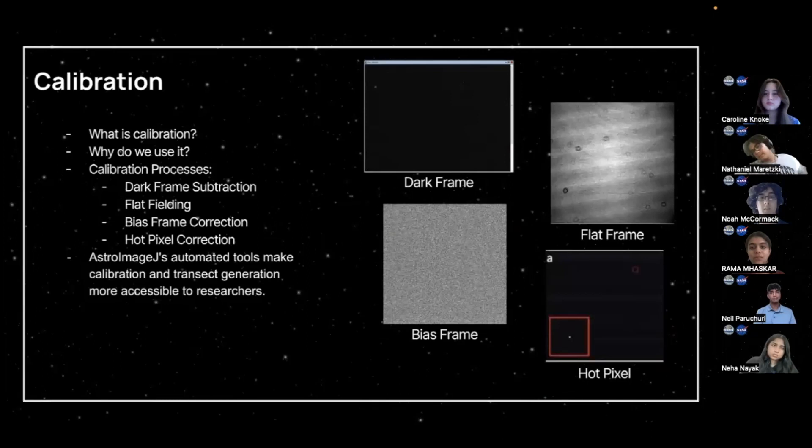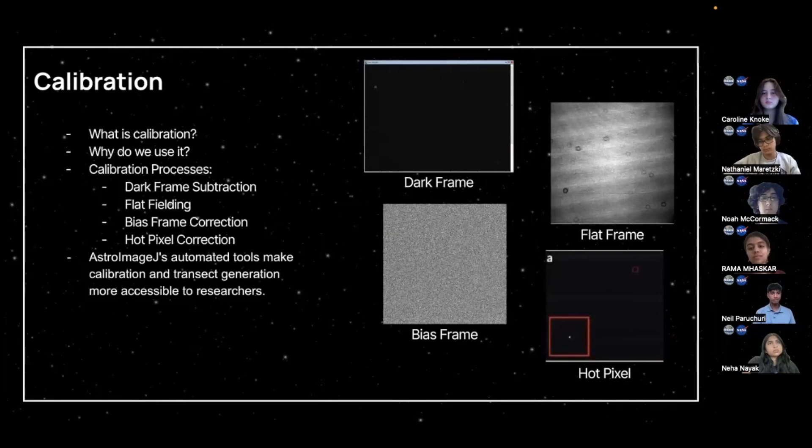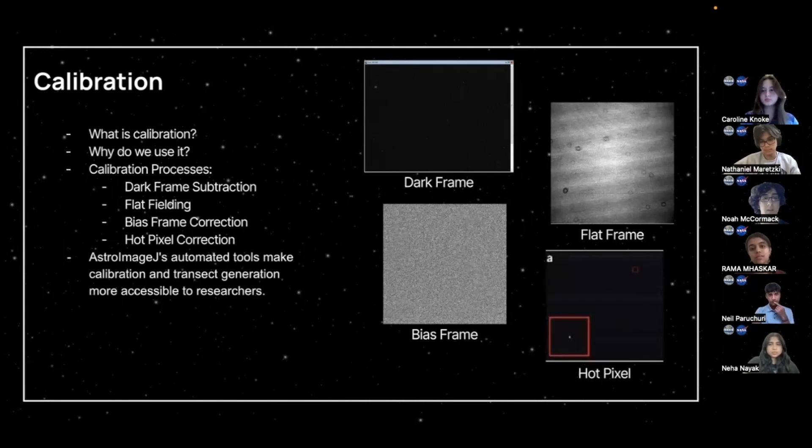Calibration and Exoplanet Observation with AstroImageJ. Calibration is changing the magnitude through observations, and it's essential when looking at images. It ensures removal of instrument biases and inconsistencies, leading to more reliable data. AstroImageJ is a powerful software program used for analyzing astronomical images, including exoplanet observations. Key calibration processes include dark frame subtraction, which is eliminating thermal noise and dark current by subtracting dark frames, flat fielding, which is correcting for pixel-to-pixel sensitivity variations across the image, bias frame correction, which is removing the electronic offset from the camera's detector, hot pixel correction, which is cooling the telescope about 40 degrees less than the surrounding temperatures using liquid nitrogen. Calibration improves the precision and quality of light curves, enabling better detection of exoplanet transits and variations in their brightness.